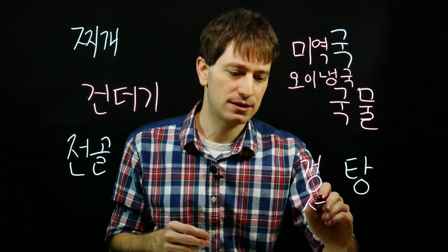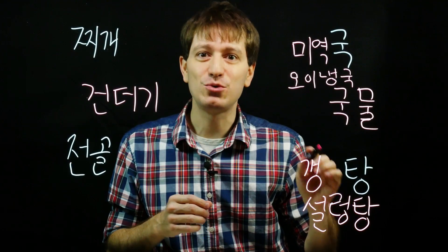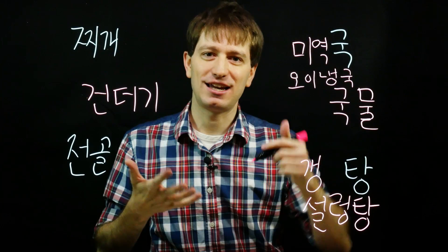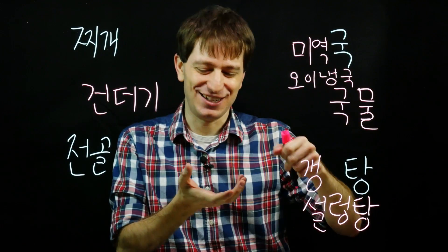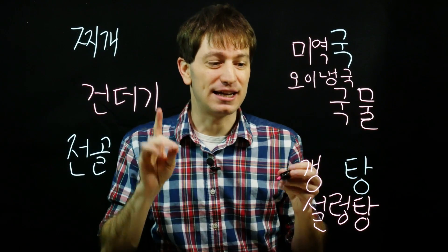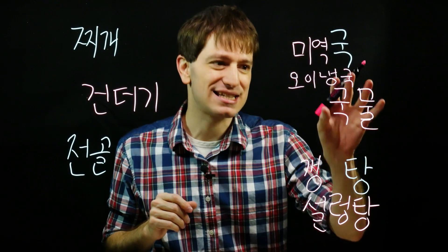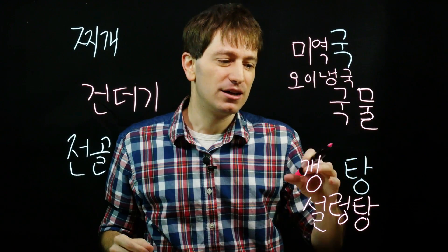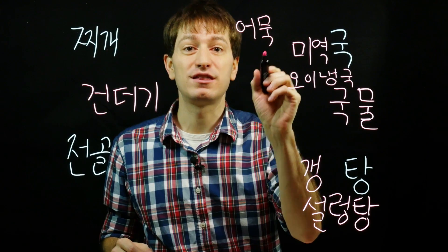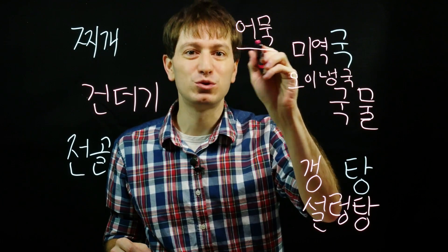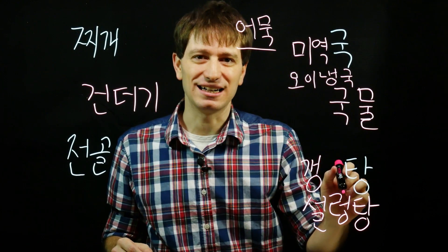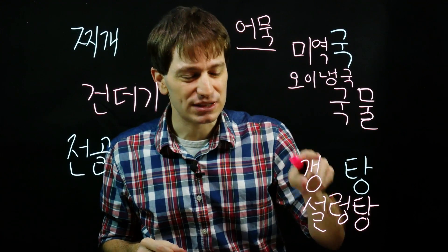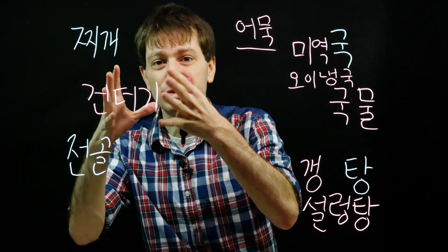One example is 설렁탕 — when you eat 설렁탕, you can adjust how much salt you want to add for flavor. Being American, I like two or three giant tablespoons and Koreans go into shock around me. Also, 탕 will typically have much less 국물 — much less broth — than 국. For example, with 어묵 (fish cake), you can have 어묵국 and 어묵탕. The 어묵국 would have much more 국물 inside, while 어묵탕 would have much less broth and perhaps more fish cake.